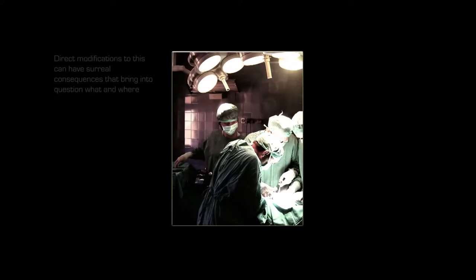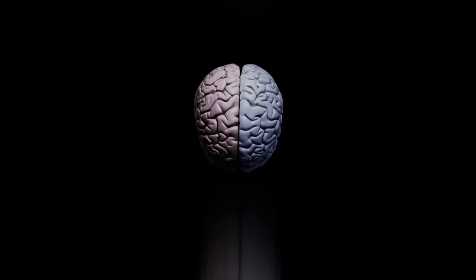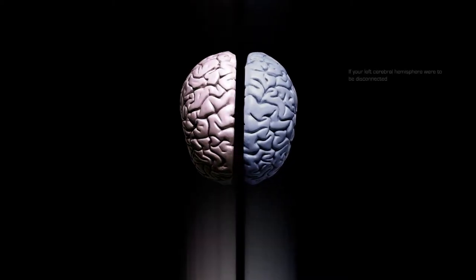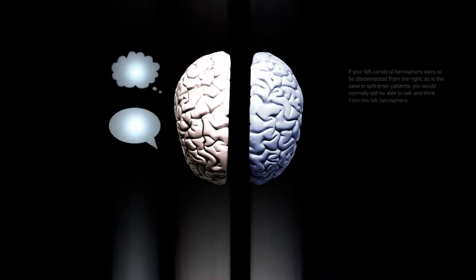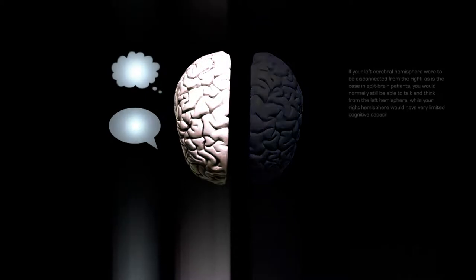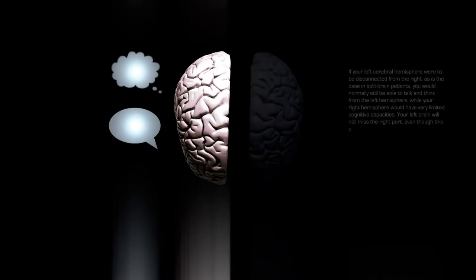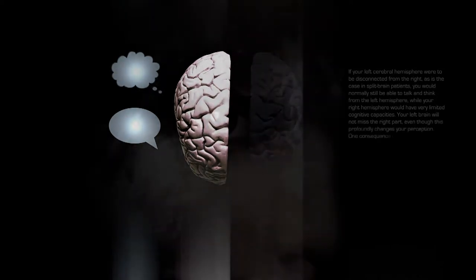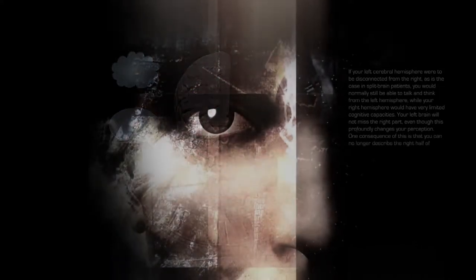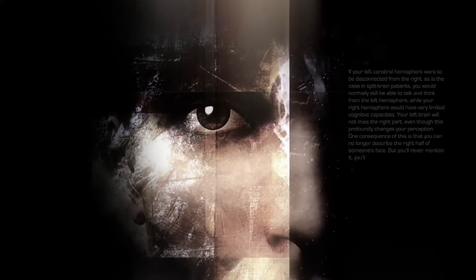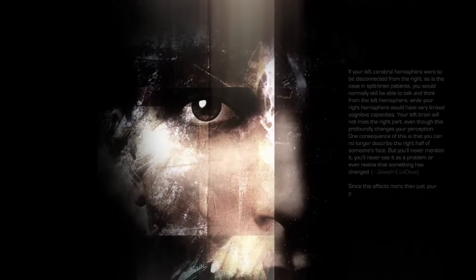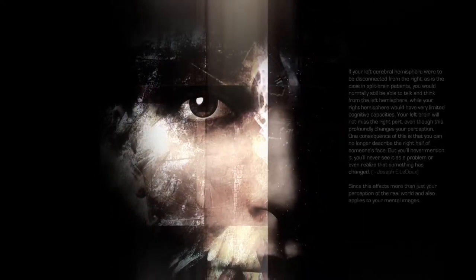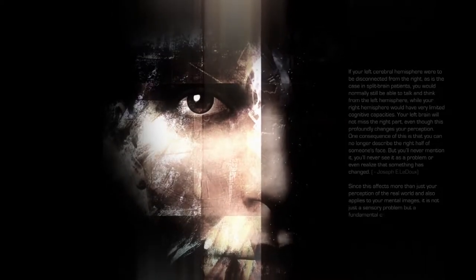Direct modifications to this can have surreal consequences that bring into question what and where consciousness really is. If your left cerebral hemisphere were to be disconnected from the right, as is the case in split brain patients, you would normally still be able to talk and think from the left hemisphere, while your right hemisphere would have very limited cognitive capacities. Your left brain will not miss the right part, even though this profoundly changes your perception. One consequence is that you can no longer describe the right half of someone's face. But you will never mention it. Since this affects more than just your perception of the real world and also applies to your mental images, it is not just a sensory problem, but a fundamental change in your consciousness.